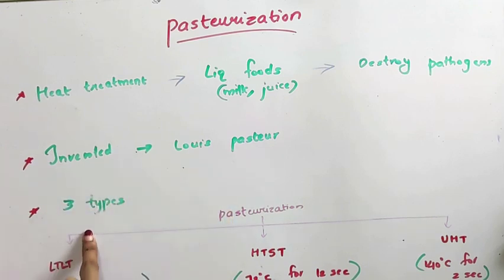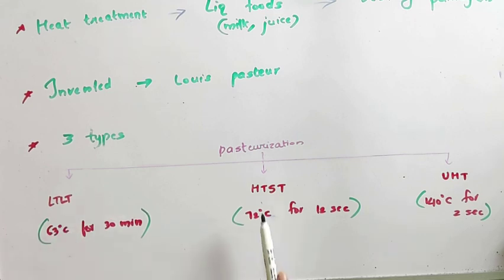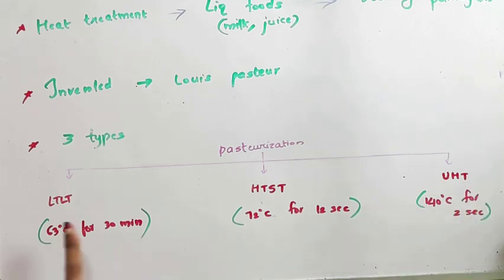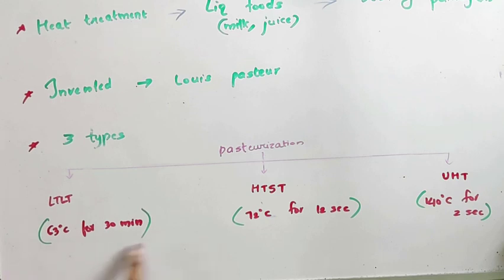There are three types of pasteurization: LTLT or Low Temperature Long Time pasteurization, HTST or High Temperature Short Time pasteurization, and UHT or Ultra High Temperature pasteurization. In LTLT, as the name indicates, a low temperature of 63 degrees Celsius is applied for a time period of 30 minutes. In HTST, a high temperature of 72 degrees Celsius is applied.